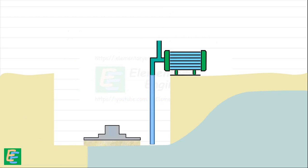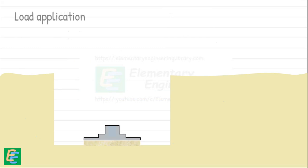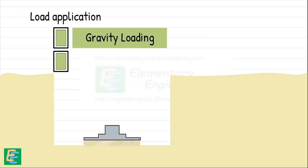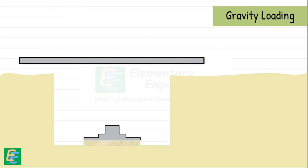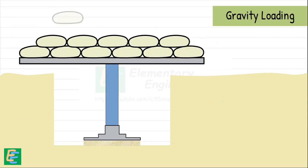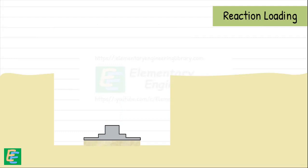Once the test plate is in place, we apply the load. There are two common ways to do this: gravity loading and reaction loading. For gravity loading, we build a platform on a vertical column that sits on the plate. We then place sandbags on the platform to apply the load. The weight of these bags creates the necessary pressure.